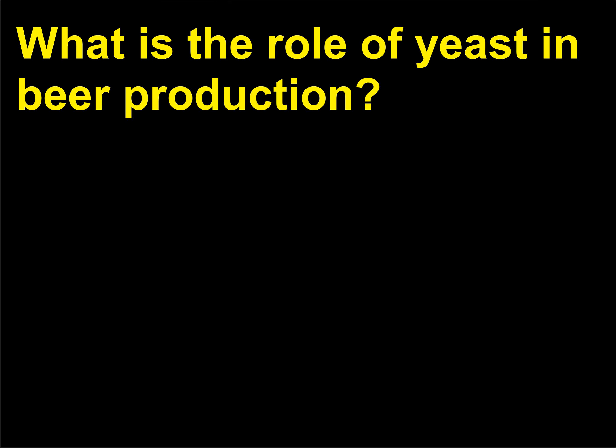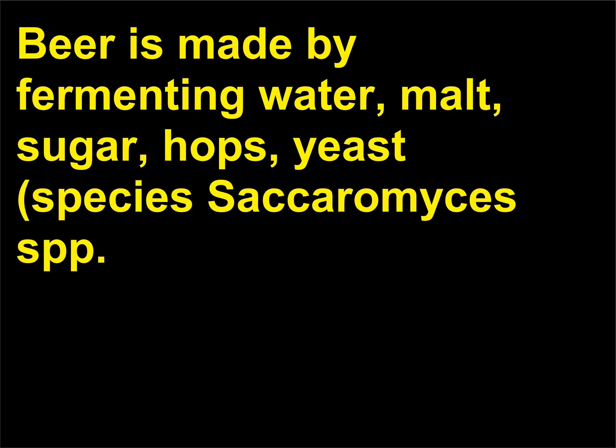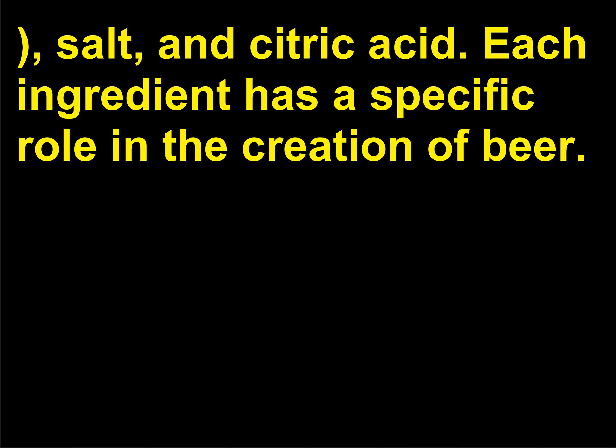What is the role of yeast in beer production? Beer is made by fermenting water, malt, sugar, hops, yeast (species Saccharomyces spp.), salt, and citric acid. Each ingredient has a specific role in the creation of beer.